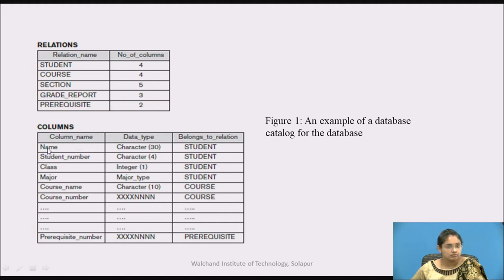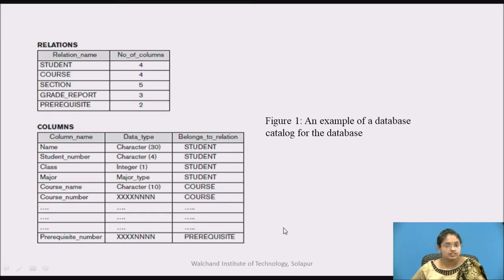For example, the metadata shows that the name column belongs to the student table and has data type character of size 30. Student number belongs to the student table with data type character of size 4. The class column belongs to the student table with data type integer of size 1, and so on. This is the view of the metadata — how it is stored in the database catalog.